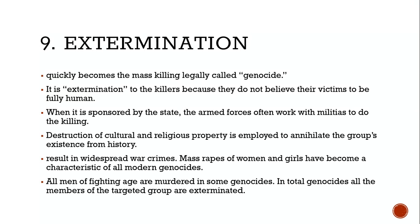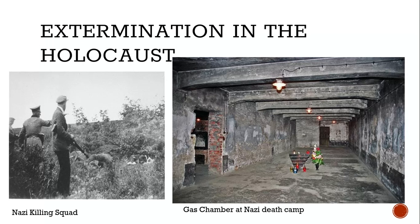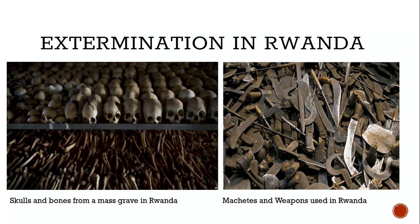Stage nine is extermination. This quickly becomes the mass killing legally called genocide. It's extermination to the killers because they don't believe their victims to be fully human. Sponsored by the state, armed forces often work with militias to do the killing. Destruction of cultural and religious property is employed to annihilate the group's existence from history. Mass rapes of women and girls have become a characteristic of all modern genocides. In the Holocaust, gas chambers and killing squads were used; in Rwanda, the tool of choice was the machete.